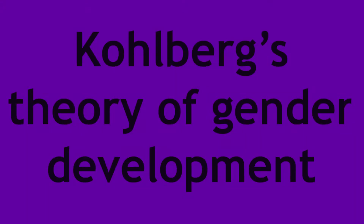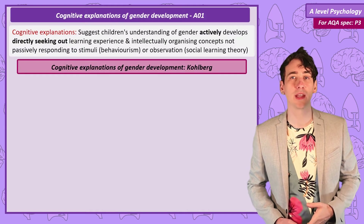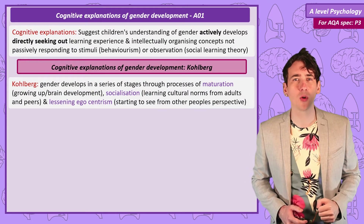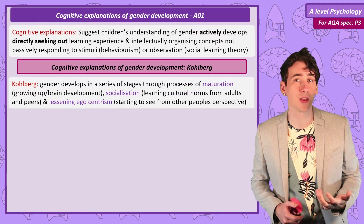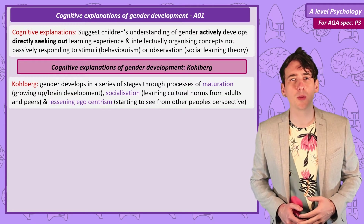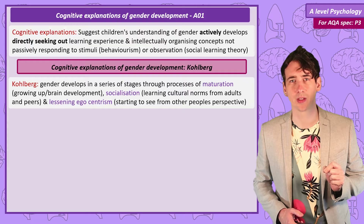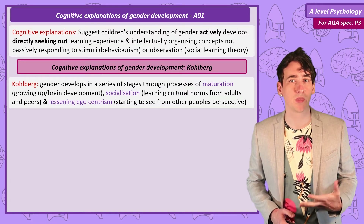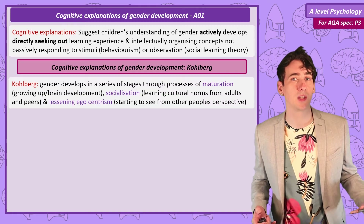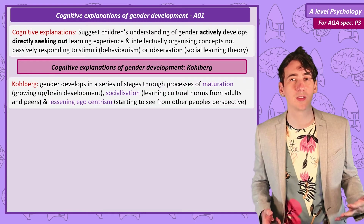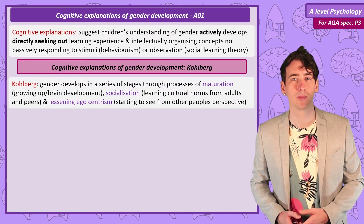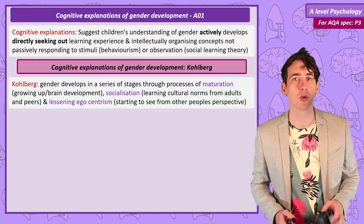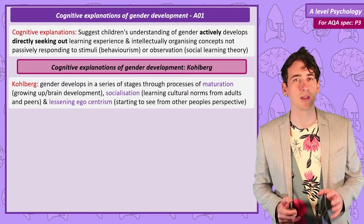Kohlberg's theory of gender is one of maturing through three stages. As a child grows up, their brain develops and they are socialised. They also become less egocentric, meaning they stop thinking only in terms of their own perspective and realise that other people have different experiences and viewpoints. Different children do cognitively develop at different ages, but according to Kohlberg they should follow the same pattern.